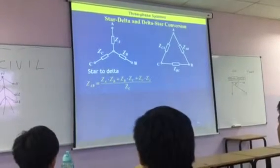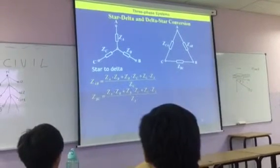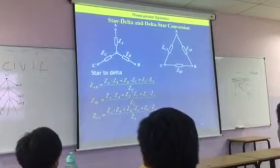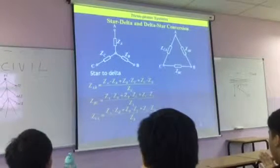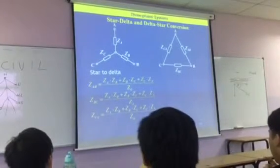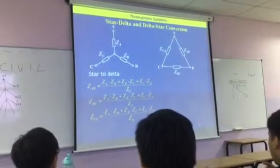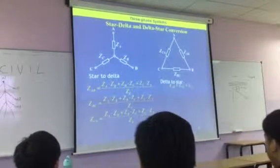So ZAB will be so, ZBC will be so, and ZCA will be so. So we can calculate the impedances of the delta going from star to delta by taking the impedances of the star. And the same thing, we can happen working the other way, delta to star.